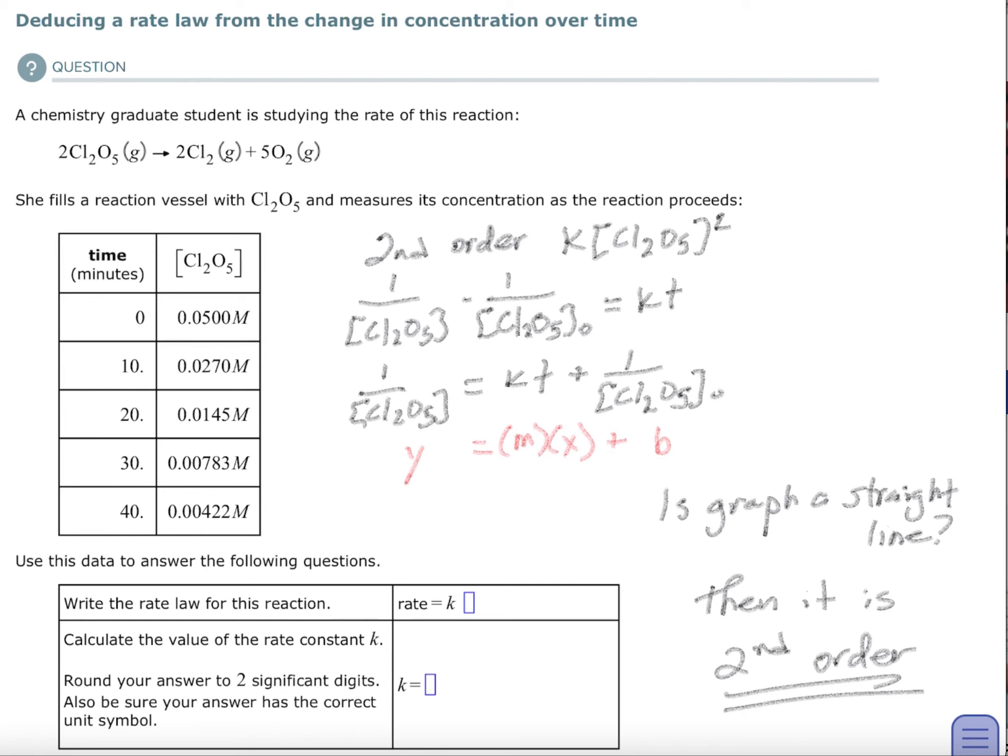This is second order. The second order integration is one over the concentration minus one over the initial concentration equals positive kt. So I simply added it to both sides, found out that I could get it into a form of y equals mx plus b. Is it a straight line? If it is, then that's a second order reaction.